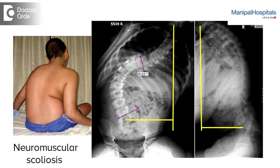Or degenerative, wherein with aging, elderly people develop a bend in the back due to an accelerated aging process. And lastly, iatrogenic — following surgeries or interventions by doctors — where the patient develops a bend in the back.